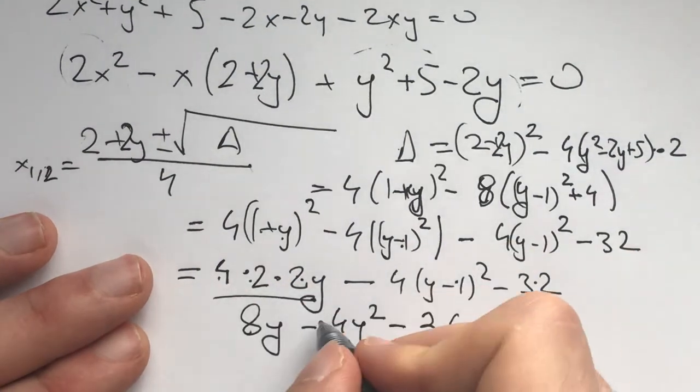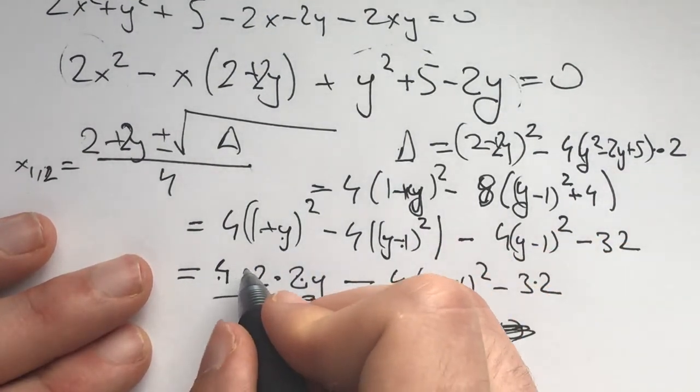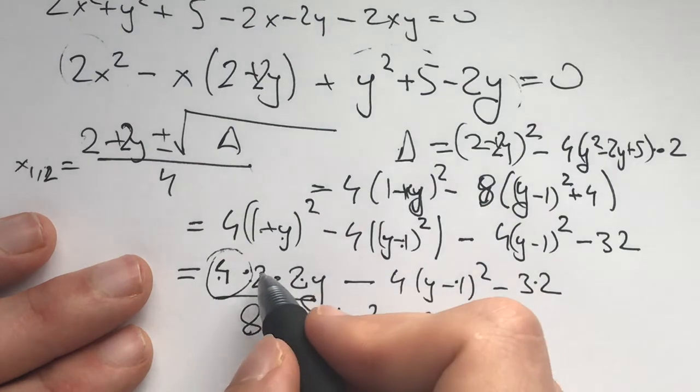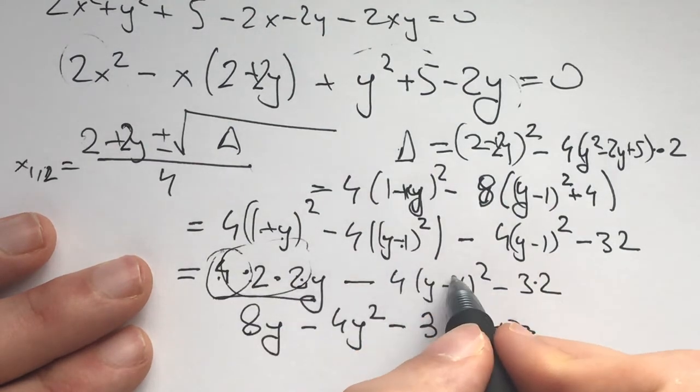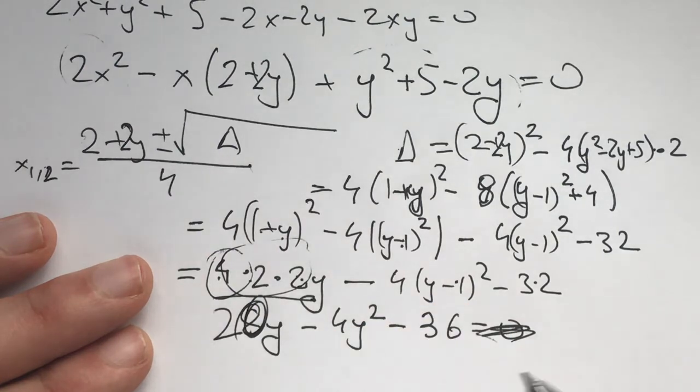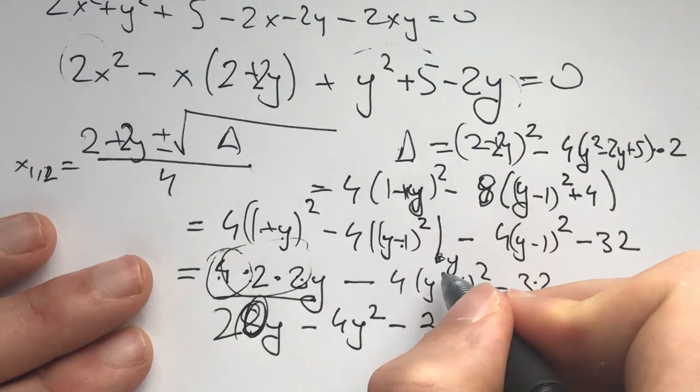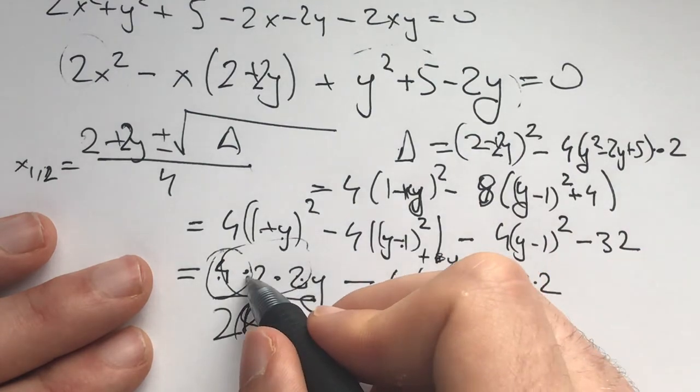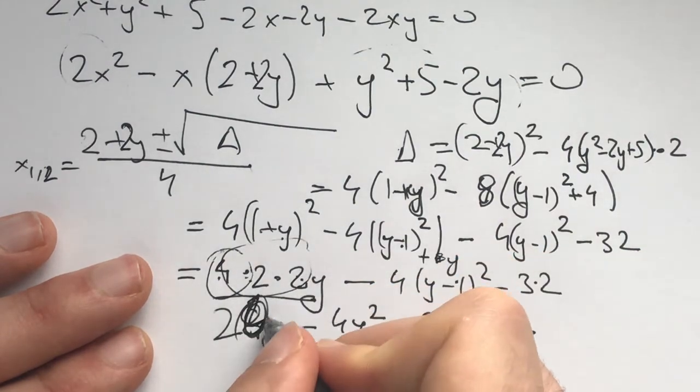This is wrong because, again, an algebraic mistake. This is 4. This is going to be a plus and it's minus minus 4y. So we have 16, which means we have 20y. Actually, let's check. We have 8y here, so we have plus 8y. This is 16. No, we have 24.